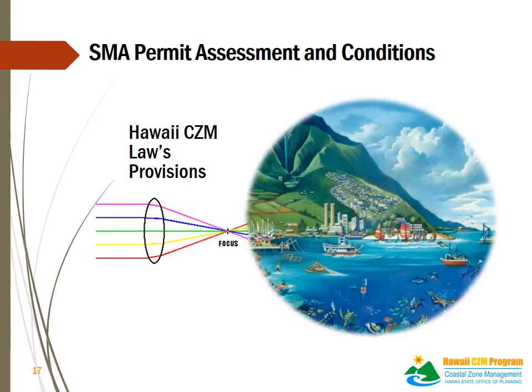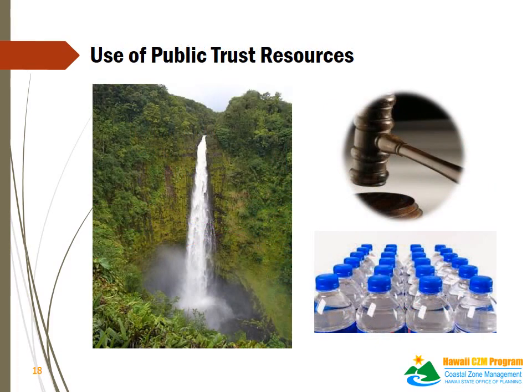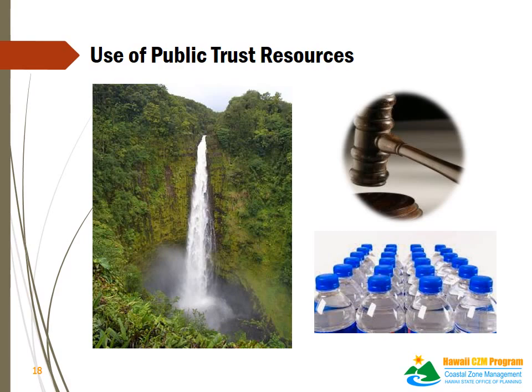The Hawaii Intermediate Court of Appeals, or ICA, Decision in Kauai Springs v. Planning Commission of the County of Kauai, dated April 30, 2013, requires decision makers to specifically consider the applicant's use of public trust resources pursuant to Article 11, Section 1 of the Hawaii Constitution. Where public trust resources are used for economic gain, the ICA requires the county authorities to give the application for SMA use and shoreline setback variants a higher level of scrutiny, and places a higher burden on the applicant to justify the use of the public trust resources.